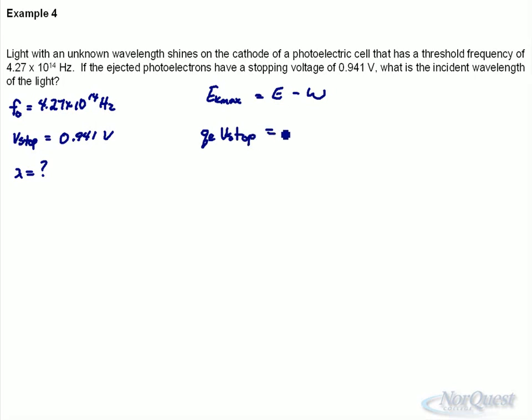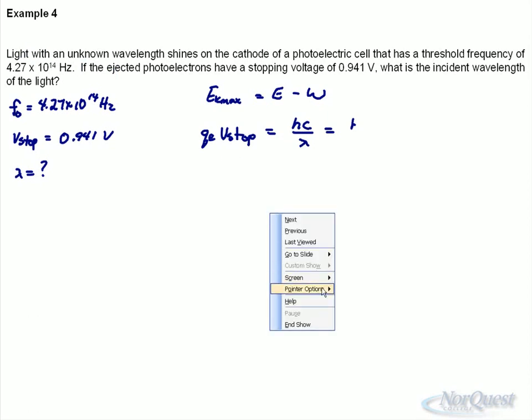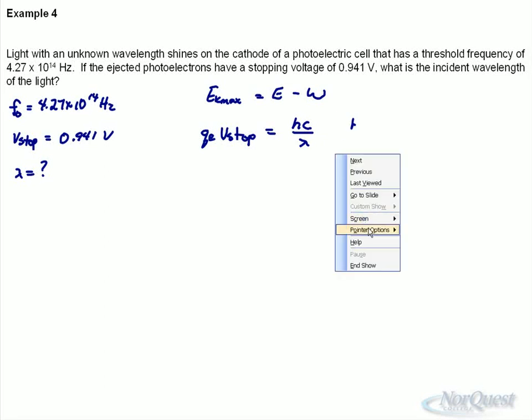The energy of the incoming light, we want wavelength, so we'll write as hc over lambda. And they don't give us the work function, but they give us threshold frequency. We will write this as minus hf₀. So there's the things we're given.